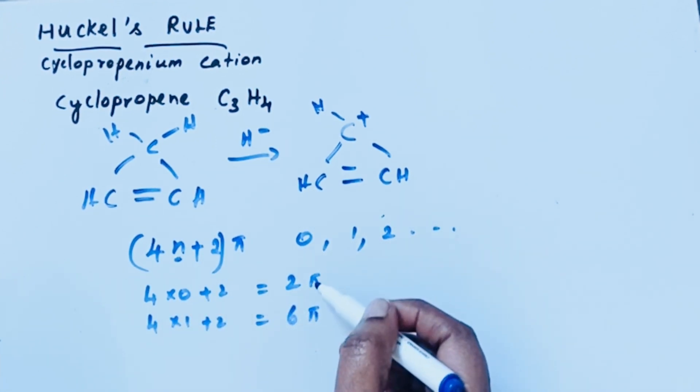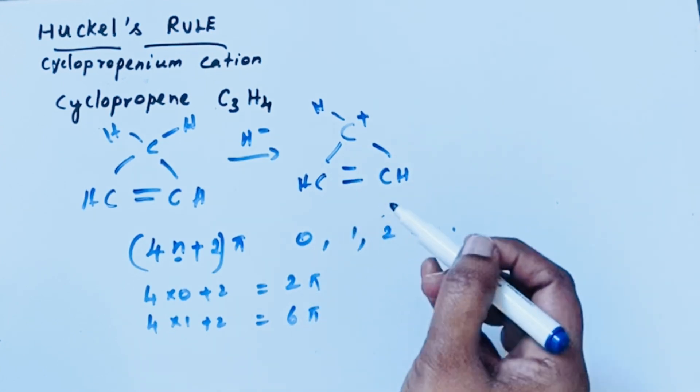It means if there is the presence of 2 pi electrons or 6 pi electrons in your compound, then the compound is aromatic.